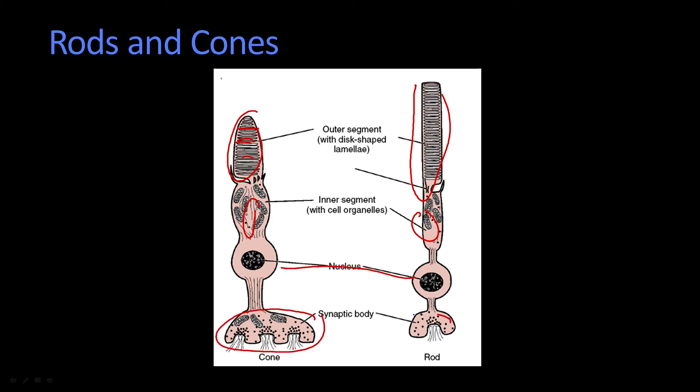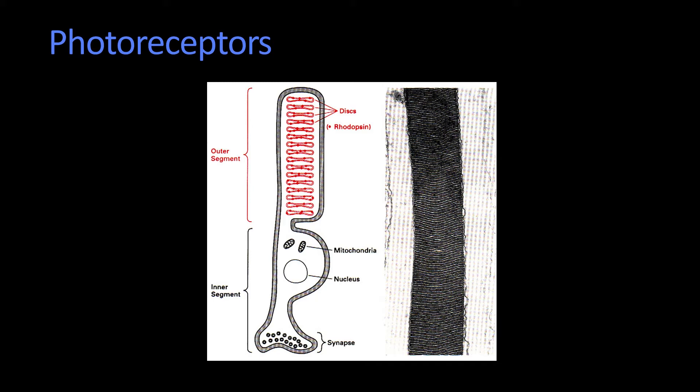And then what's important is it has this synaptic body where it changes the chemical properties at the synapses depending upon the light. So let's take a look just at the rod for a minute. The rod has this chemical, these discs made out of what's called rhodopsin.